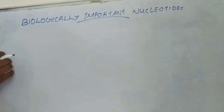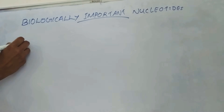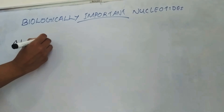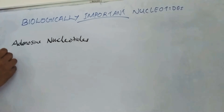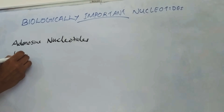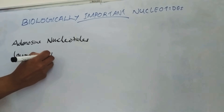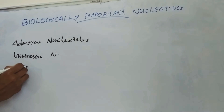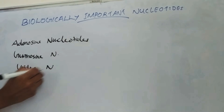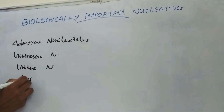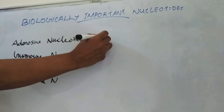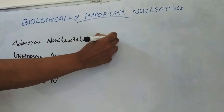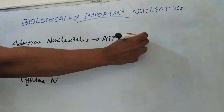Let's see some of the biologically important nucleotides. The first one is adenosine nucleotides, which include ATP, ADP, and AMP.